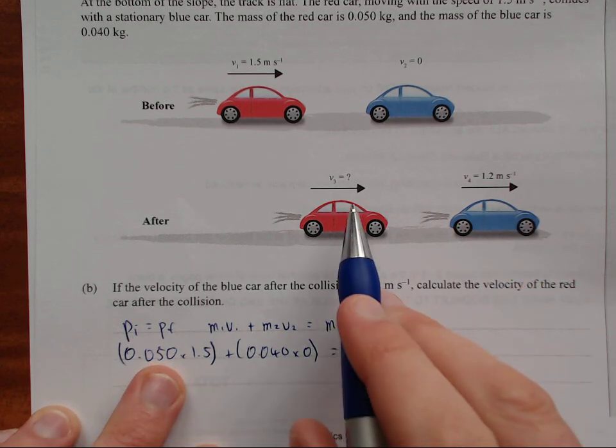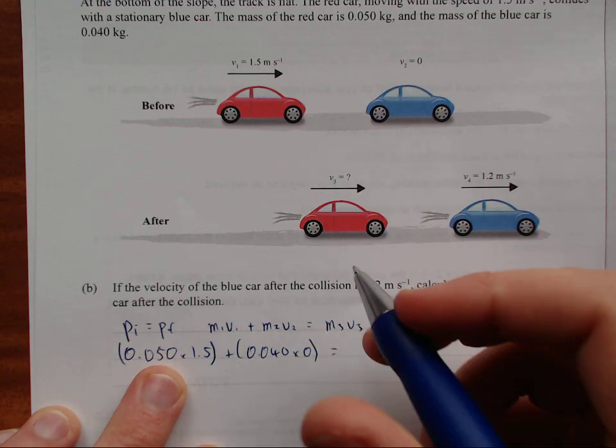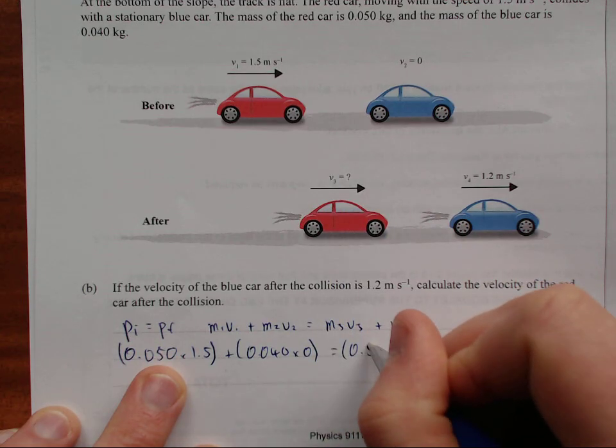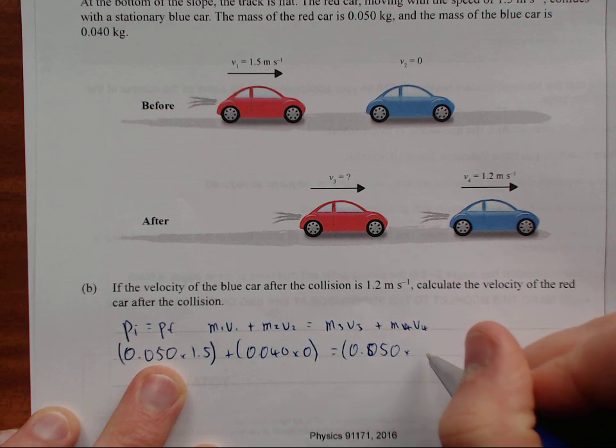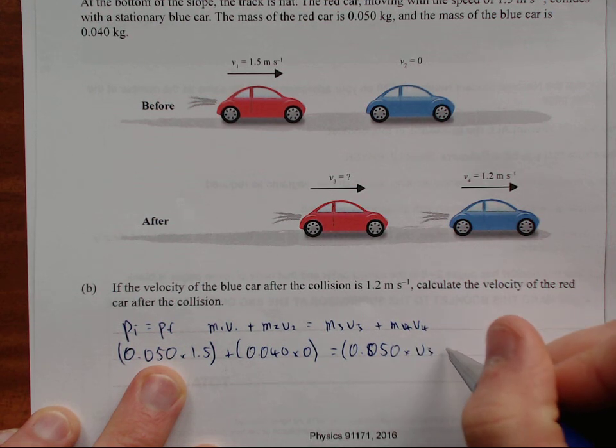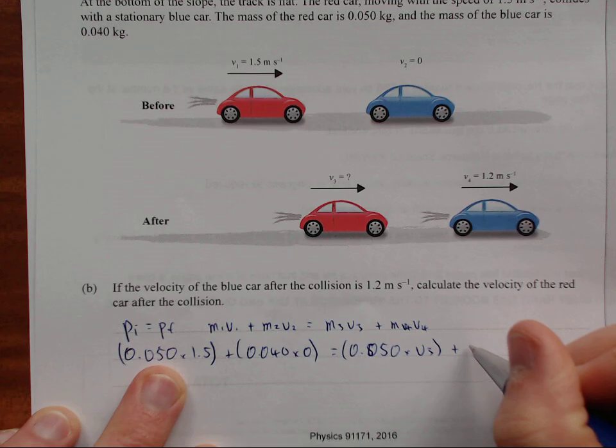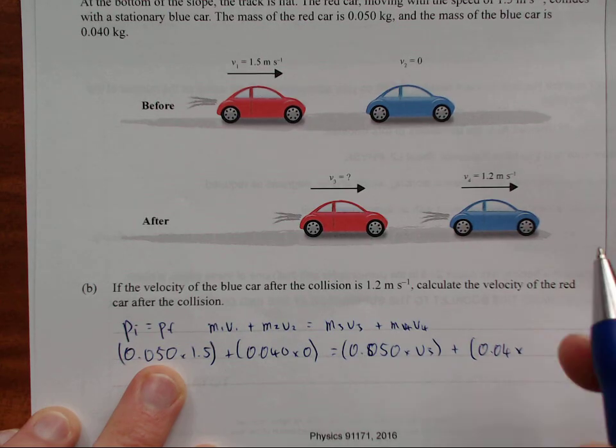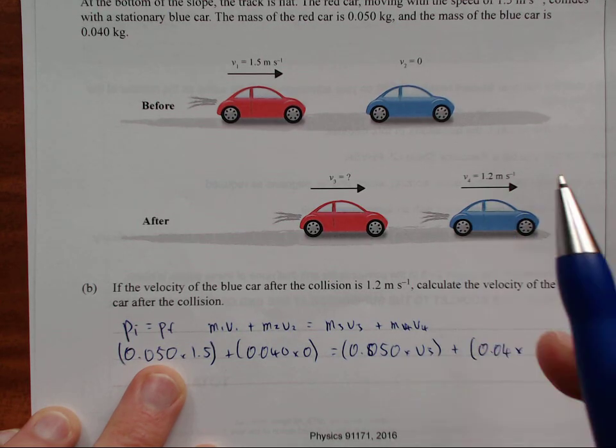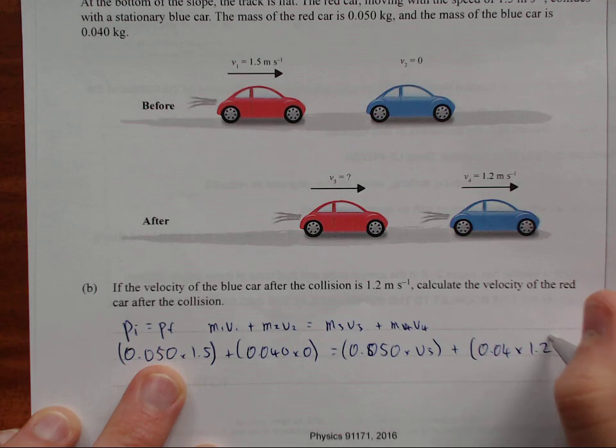M3 is, so mass of the red car again, 0.05, times V3, the one that we don't know, plus M4, the blue car again, 0.04 times the velocity of the fourth one which is 1.2.